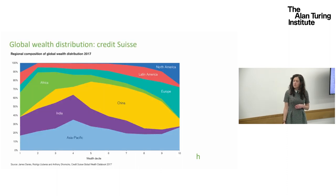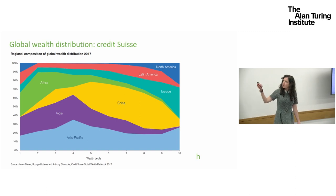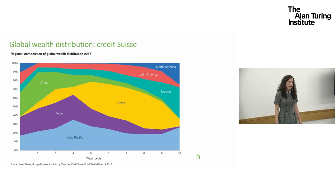We start by taking the best available data source we have which maps out the global wealth distribution. This comes from Credit Suisse and their Global Wealth Databook.